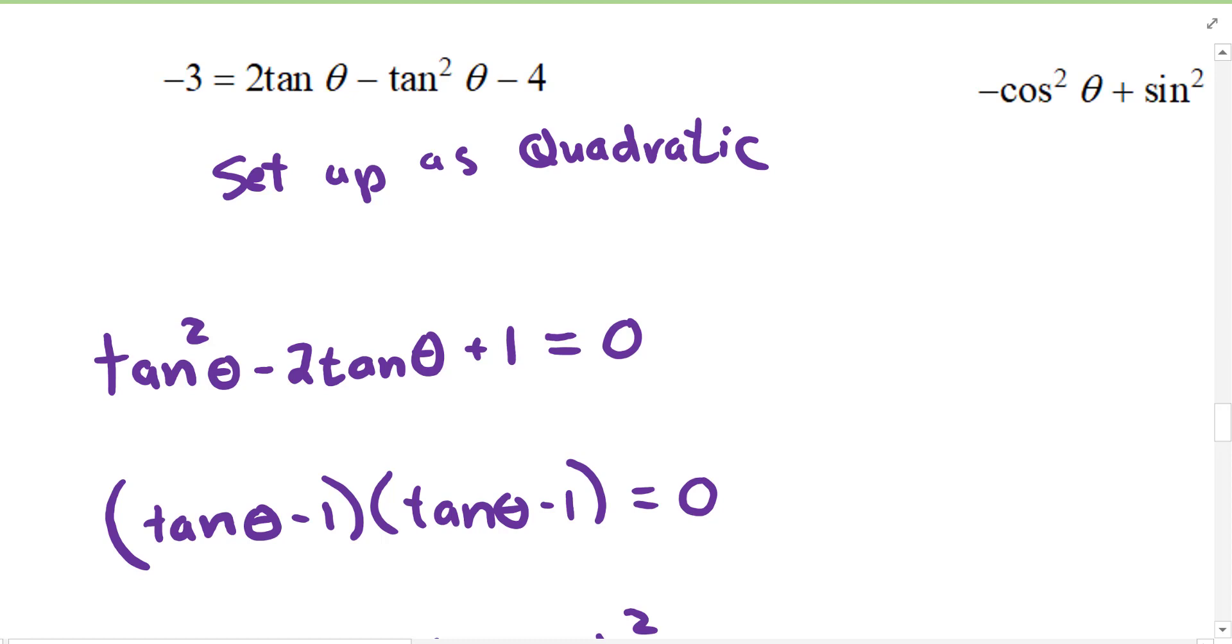I think this is the last one we're going to do. We have tangents on both sides. One is a quadratic. So we're going to set this up as a quadratic like we would other things. Since this is negative over here, I'm going to bring all of this to the left side because I don't want to deal with the negative. I'm going to add tangent squared theta, subtract two tangent theta, and add four. That leaves us with tangent squared theta minus two tangent theta plus one.